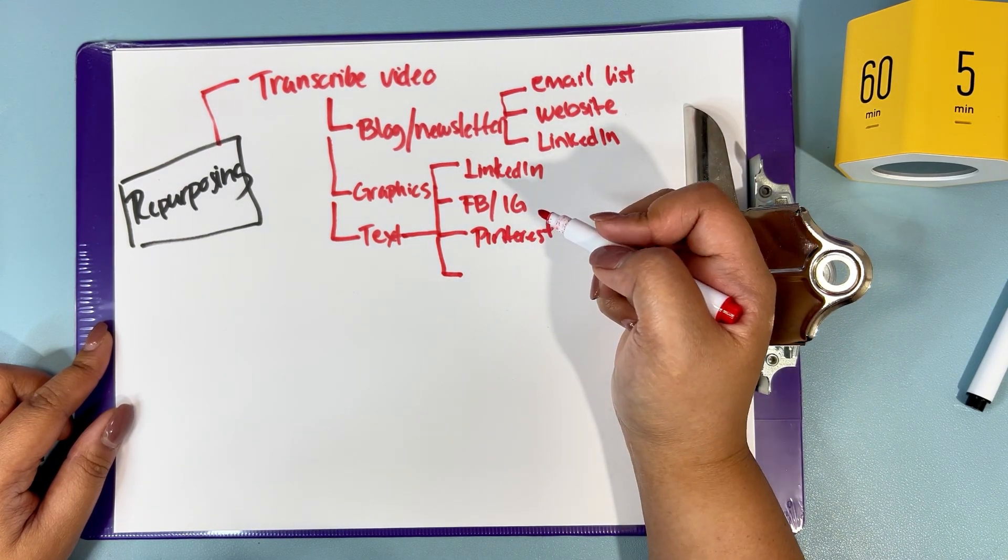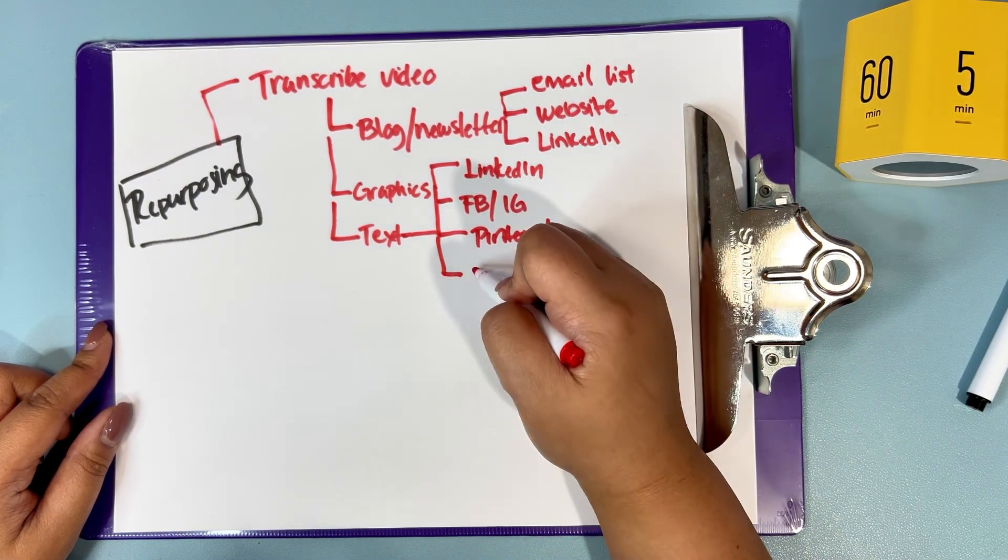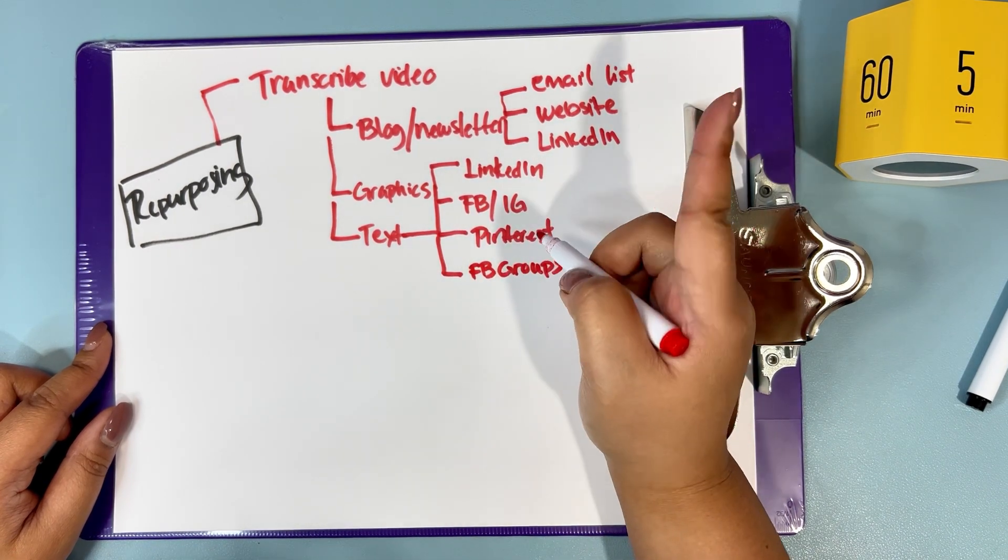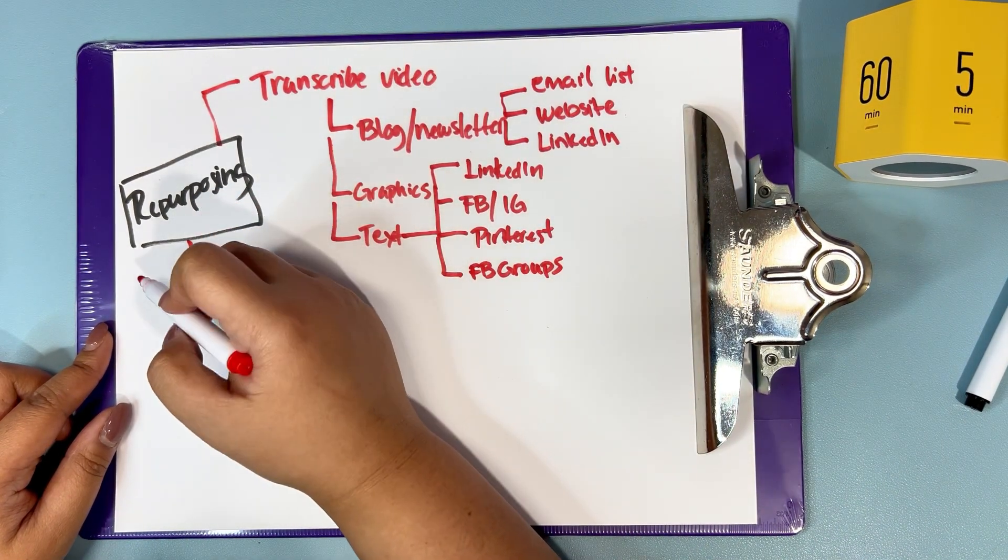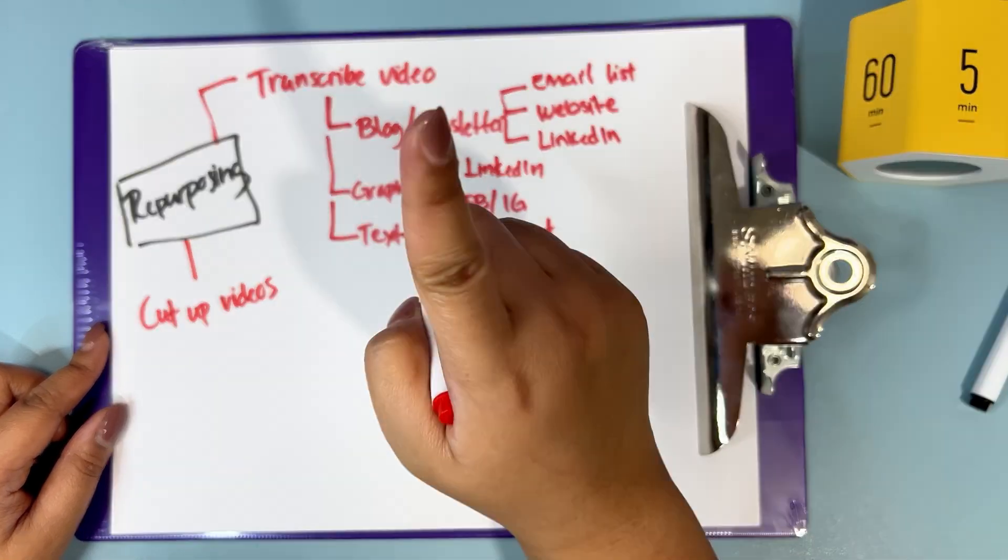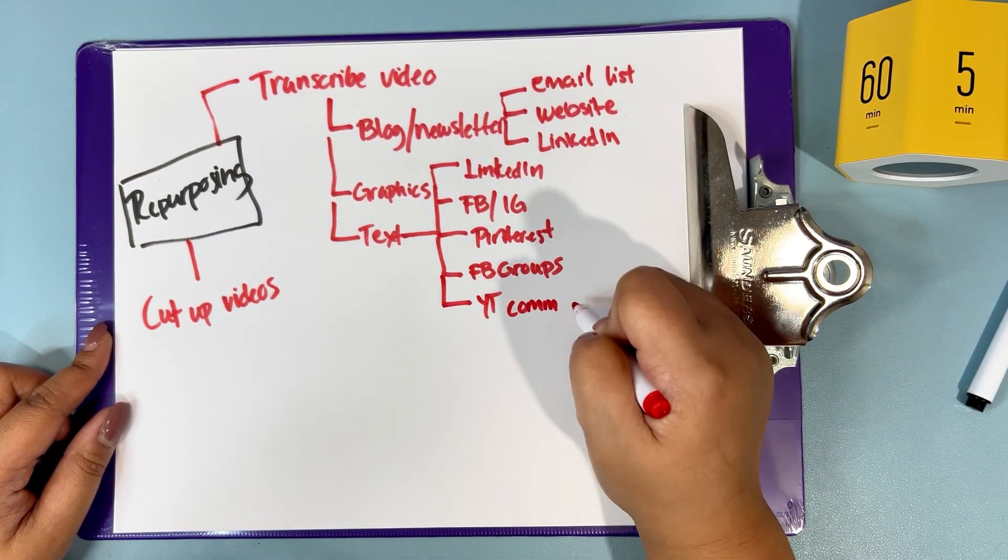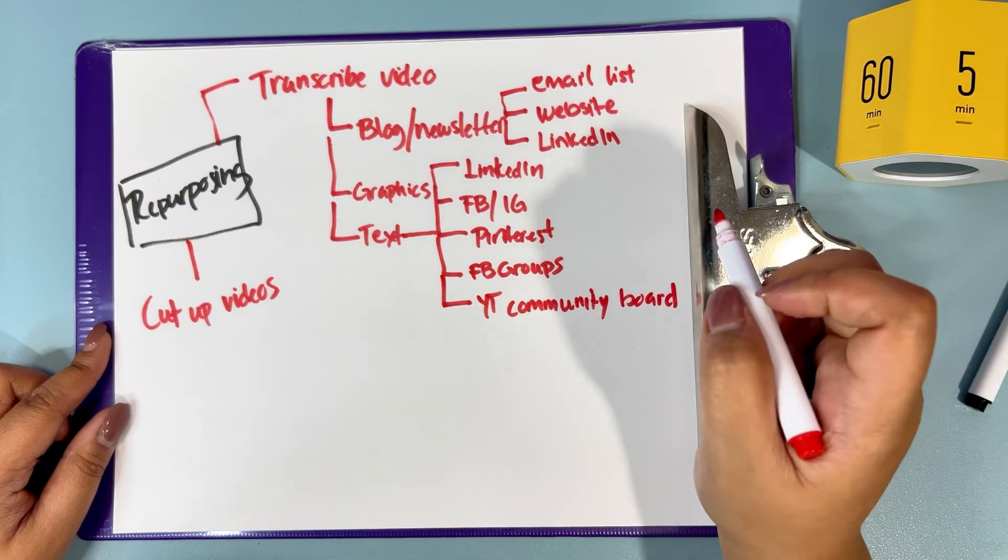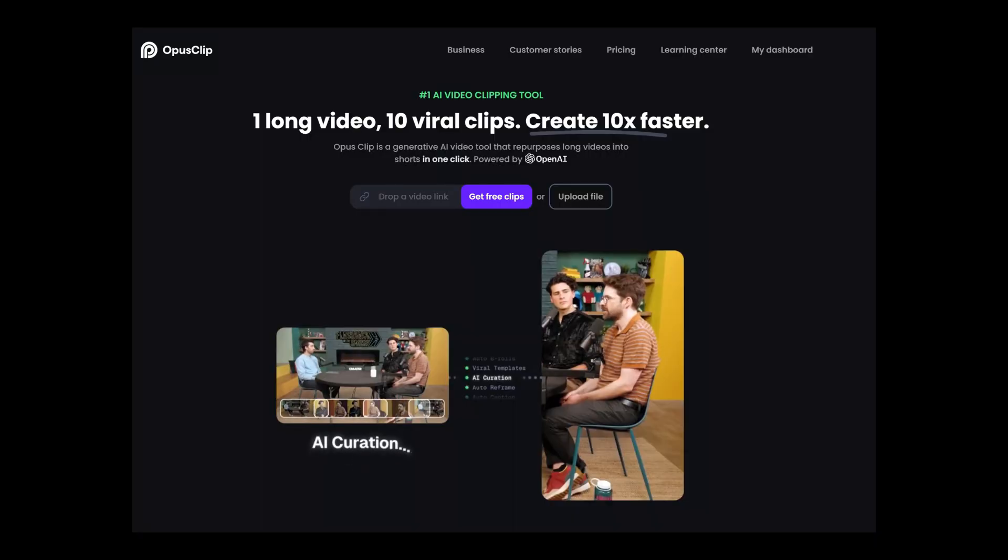Or you can simply create text-based social media posts using transcriptions from your videos and share them on platforms like LinkedIn, Facebook. After transcribing your video, cut it into short clips, ideally around 30 to 60 seconds or less. To cut your videos, you can use Descript or Opus Pro.